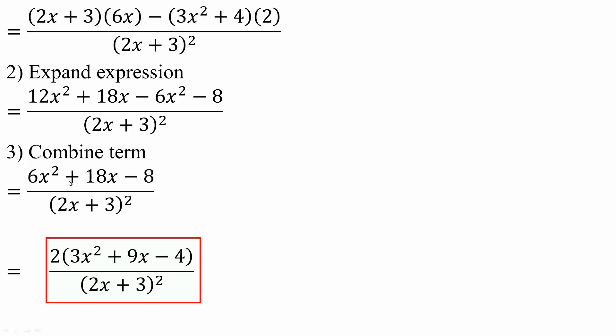Next, we can factor out a 2 from the top, so we would get 2 parentheses 3x squared plus 9x minus 4 divided by the square of what's below, and this right here is our final answer.